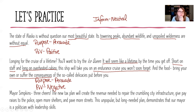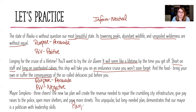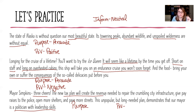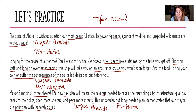Last example: 'Mayor Simpkins, three cheers. A new tax plan will create the revenue needed to repair the crumbling city infrastructure, give pay raises to the police, and open more shelters and pave more streets. This unpopular but long-needed plan demonstrates that our mayor is a politician with leadership skills.' The author feels pretty positively about Mayor Simpkins — three cheers, leadership skills, positive outcomes from the plan. Their purpose is to persuade us that the mayor is doing the right thing.